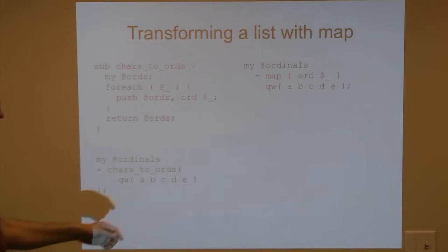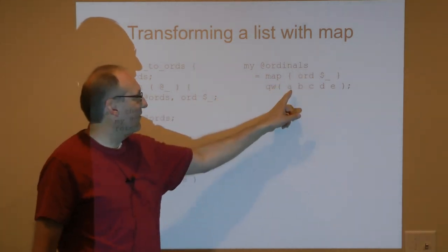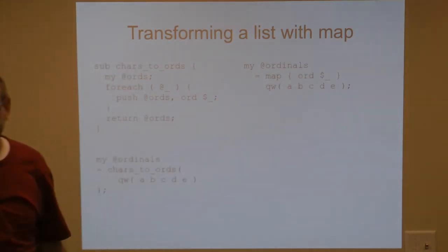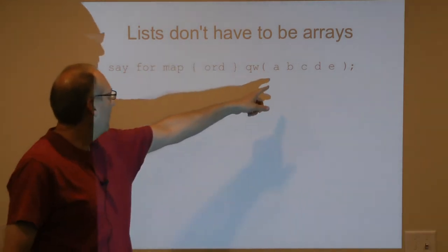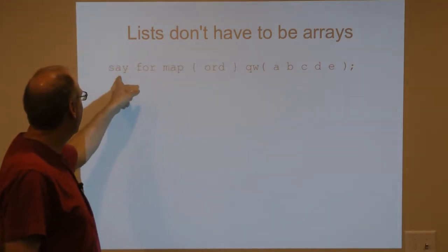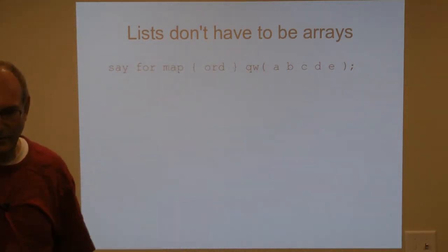So again, map is going to call this code block on every element in this list. So there's the same thing again, just easier to read. Again, lists don't have to be arrays. Here we're going straight from a list, transforming it with map, and then printing it out. There's no intermediate variable. There's no array container.